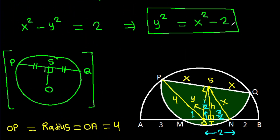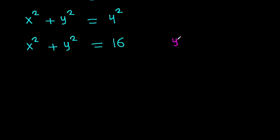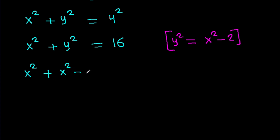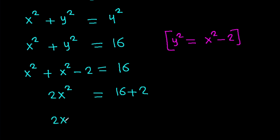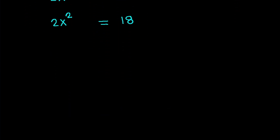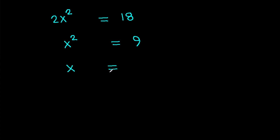And Y square is X square minus 2. So substituting, X square minus (X square minus 2) equals 16, and 2X square equals 18. So X square will be 9 and X will be 3.